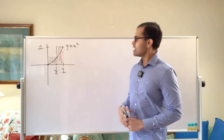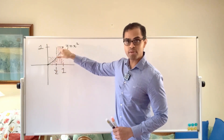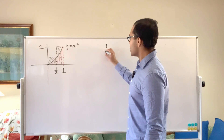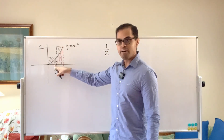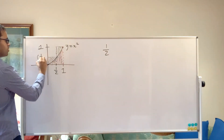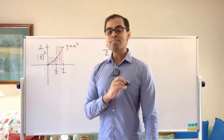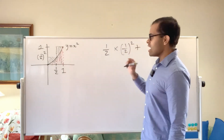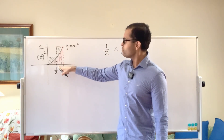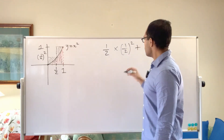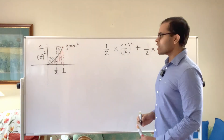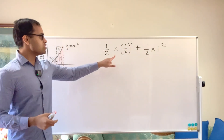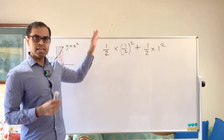Now, I've approximated the red area by the areas of these two rectangles. Of course, this is going to be bigger than the total area because there's excess just above the graph of the parabola but within the rectangles. The area of the first rectangle is base times height: the base is one-half and the height is one-half squared, since y equals x squared. So we get one-half times one-half squared, plus one-half times one squared for the second rectangle. This gives us a first approximation from above.